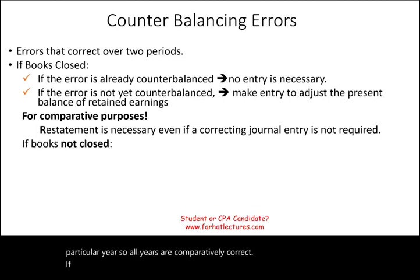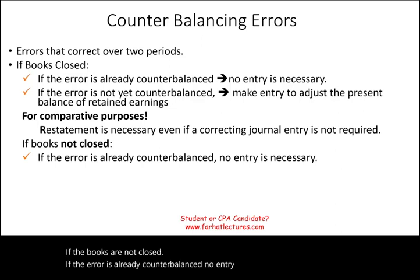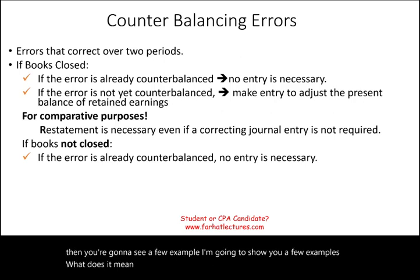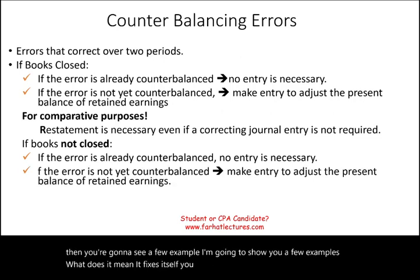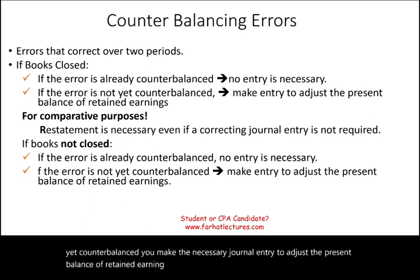If the books are not closed and the error is already counterbalanced, no entry is necessary. If it fixed itself, you don't have to do anything. If the error is not yet counterbalanced, you make the necessary journal entry to adjust the present balance of retained earnings — you fix it into retained earnings. Those are counterbalancing errors, and we're going to look at a few of them.